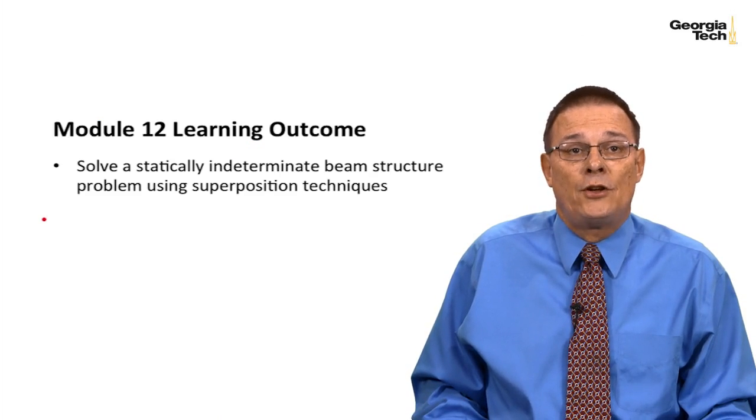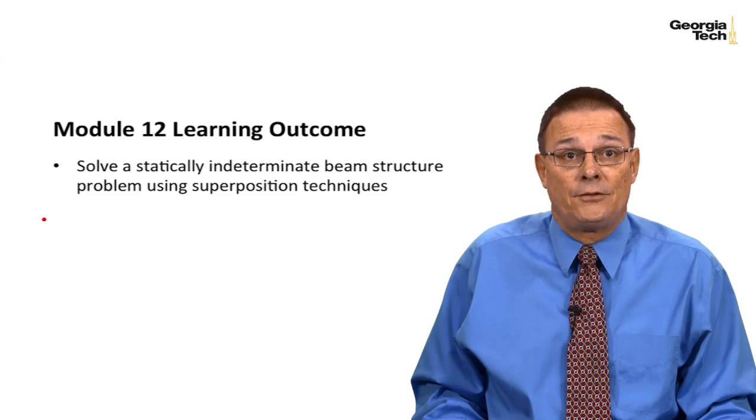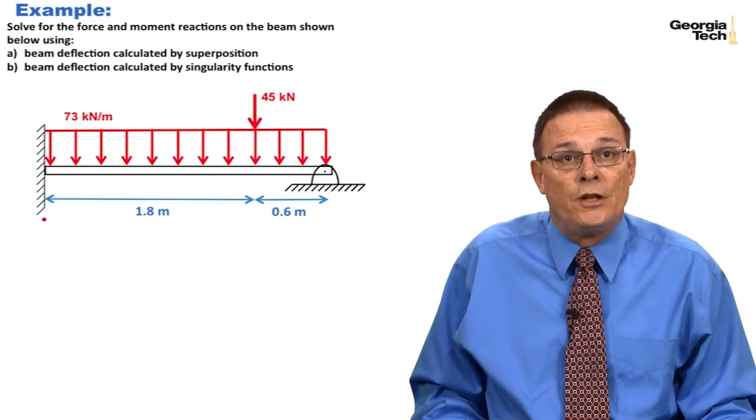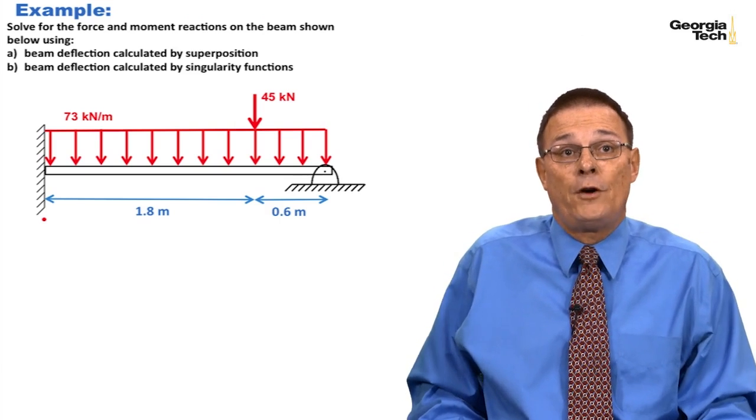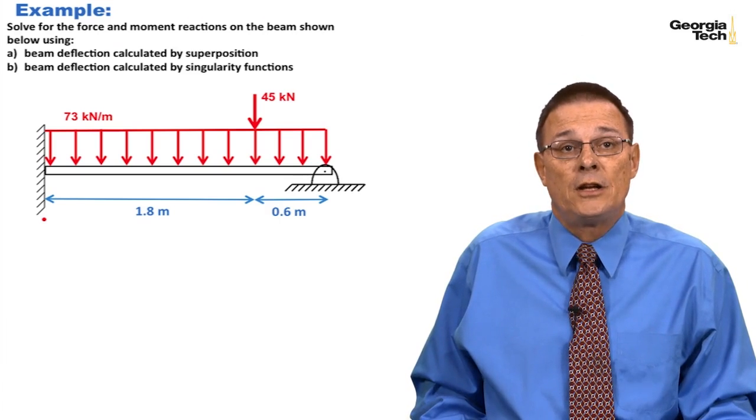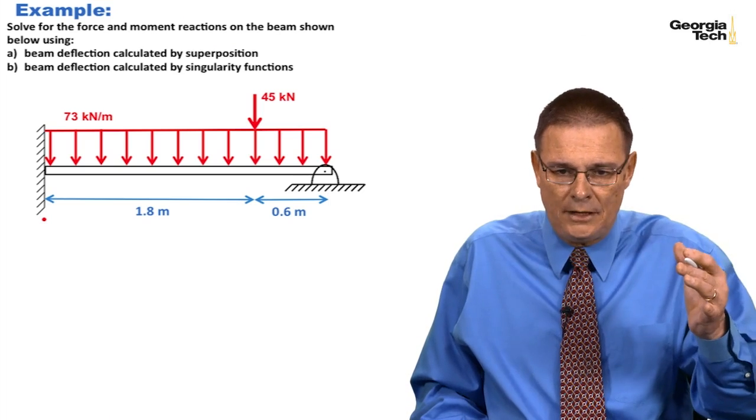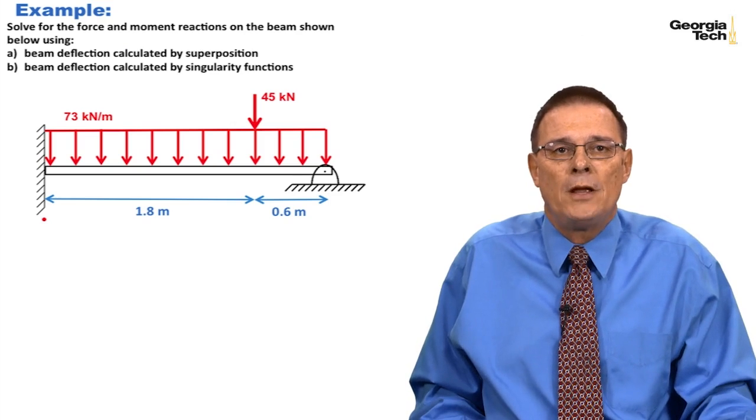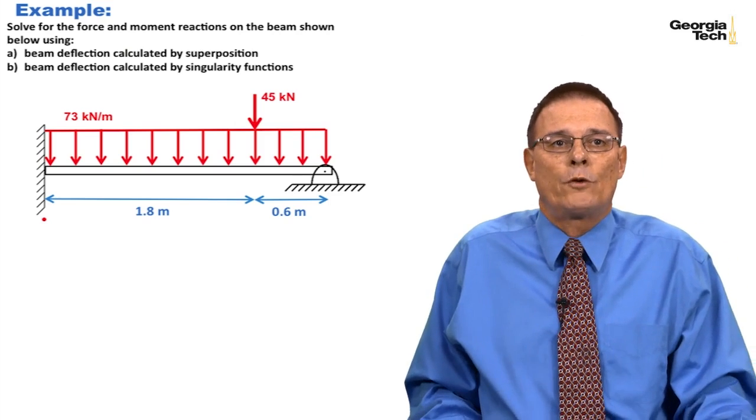Our learning outcome is to solve a statically indeterminate beam structure using superposition techniques. Here's our example: we want to solve for the force and moment reactions in the beam. In this module, we'll use superposition techniques for finding the deflection, and in the next module we'll redo the problem using singularity functions. Sometimes for superposition techniques, you can't always find common beam tables for a particular loading situation, and you may want to just go with the singularity function techniques which will work for you.